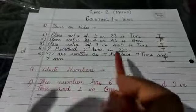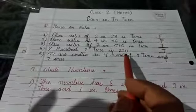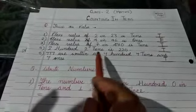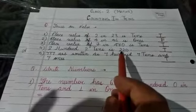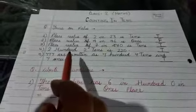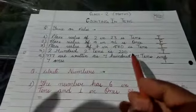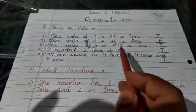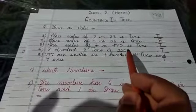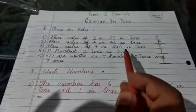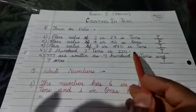Now see question number 4: 200 and two tens is 220. In this question, 2 is at hundreds place and 2 is at tens place, and 0 is written at ones, so the number is 220. This is correct, so we have written here true.